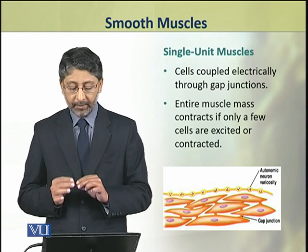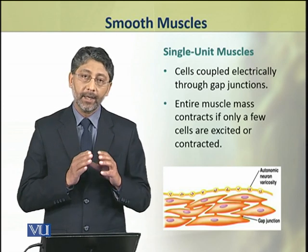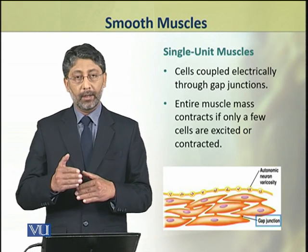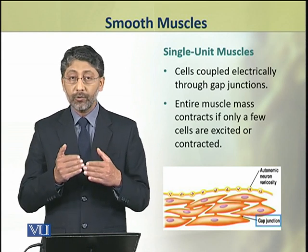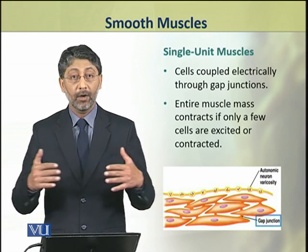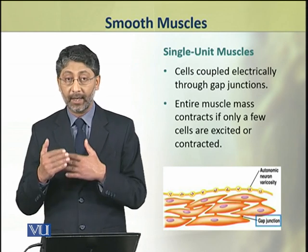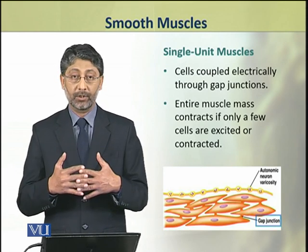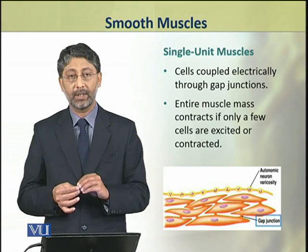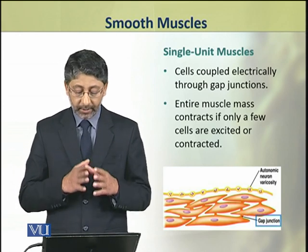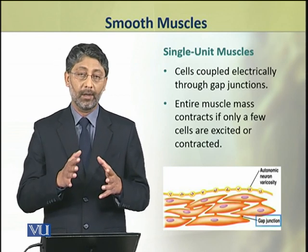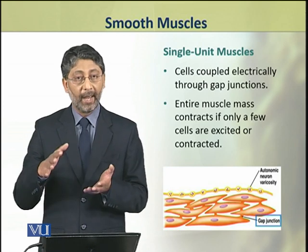In single unit muscles, cells are electrically coupled through gap junctions. Neurons innervate only a few cells, but because cells are electrically coupled through gap junctions, if only several cells are excited and contractions occur in them, this contraction spreads to all cells. So the whole smooth muscle mass contracts.